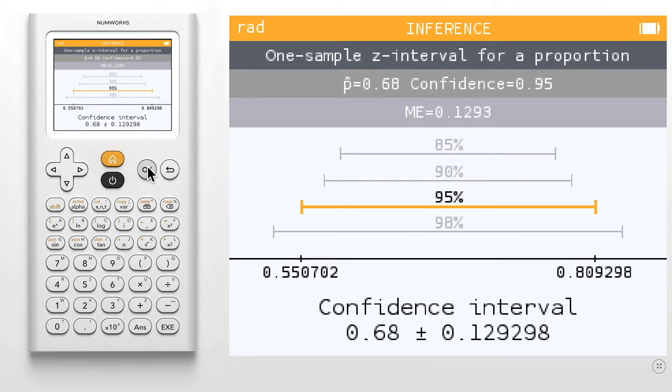The final screen provides us with the confidence interval written as the point estimate plus or minus the margin of error. The endpoints of the interval can be found on the number line above.